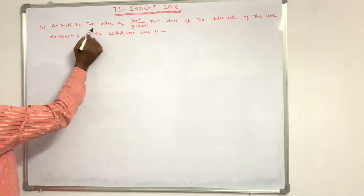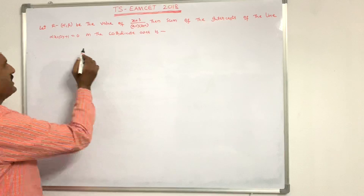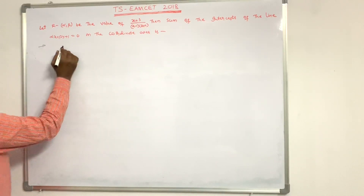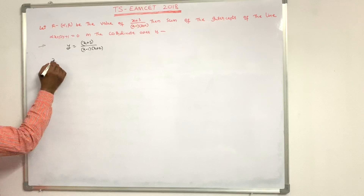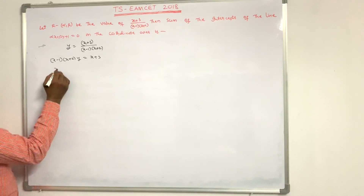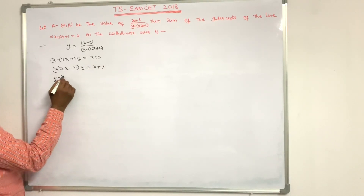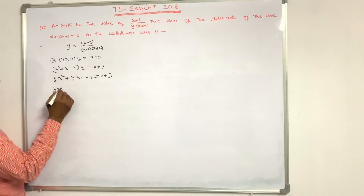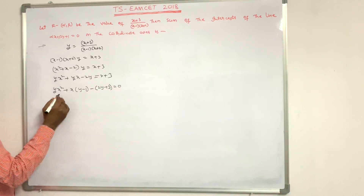Let (α, β) be the value of y = (x + 3)/[(x - 1)(x + 2)]. Then find the sum of intercepts of the line αx + βy + 1 = 0 on the coordinate axes. Given y = (x + 3)/[(x - 1)(x + 2)], we get (x - 1)(x + 2)y = x + 3, which expands to yx² + yx - 2y = x + 3. Rearranging: yx² + (y - 1)x + (-2y - 3) = 0. This is a quadratic equation in x.